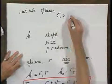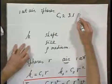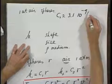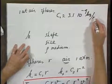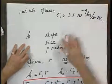C1 is approximately 3.1 times 10 to the minus 4 kilograms per meter per second.